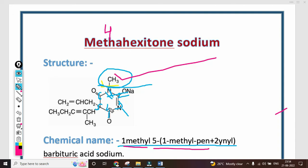Then five - the five number position. What attachment is there? 1-methyl-pent-2-ynyl barbituric acid. Here two pentynyl groups are attached. Then 'yl' has come - yl means alkyne. That's why three hydrogen groups.